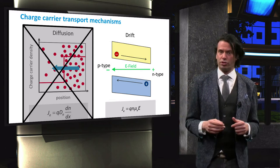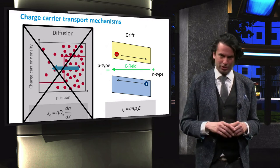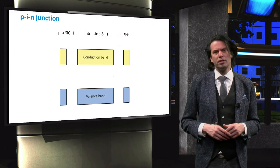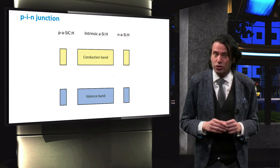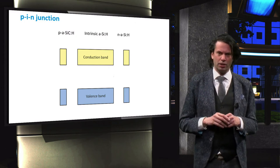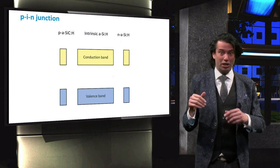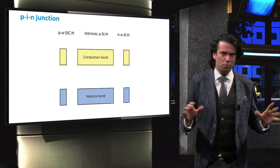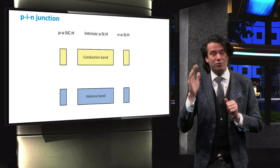Thin-film silicon solar cells are therefore sometimes referred to as drift devices. Consequently, amorphous silicon solar cells are not based on a p-n junction, but rather on a p-i-n junction. This means that an intrinsic layer, meaning a layer that is not intentionally doped, is sandwiched between a p-doped and an n-doped layer.